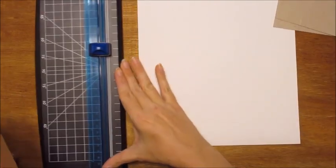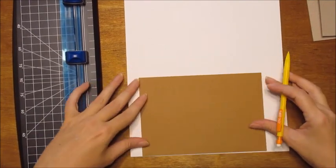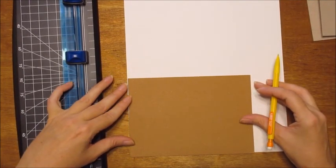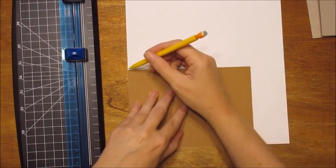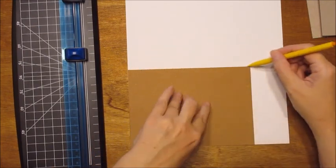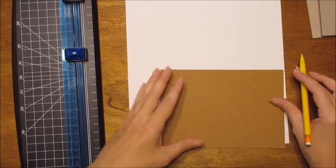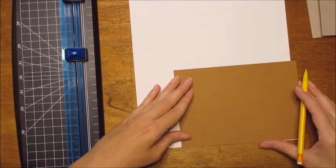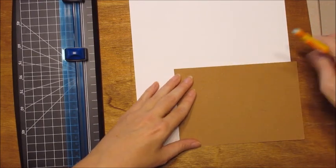For this size paper I can get two 5x7 inch size blanks and one 4x6. So I just line it up and trace it. And I make sure to extend the line all the way across so I can line it up easily in the cutter.